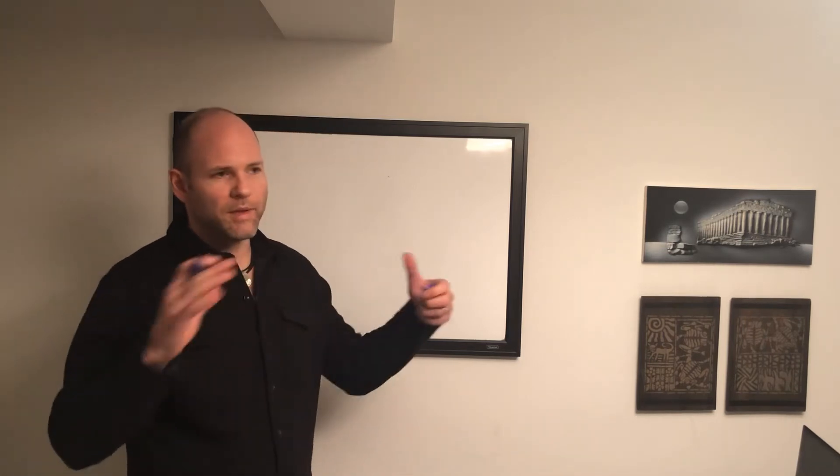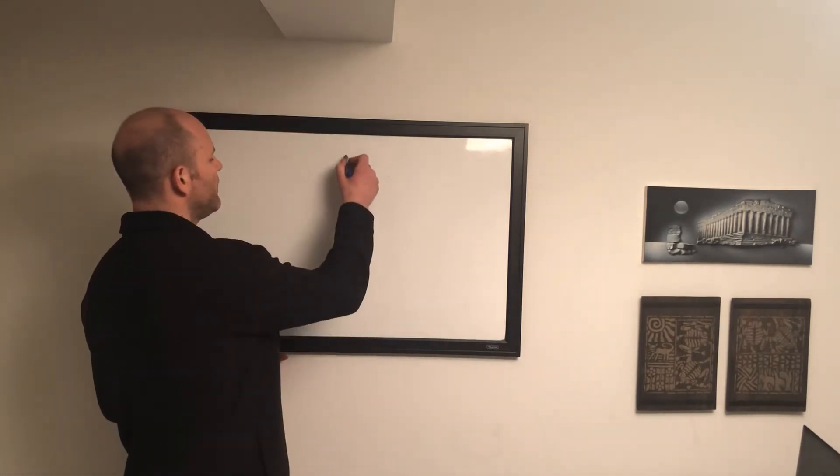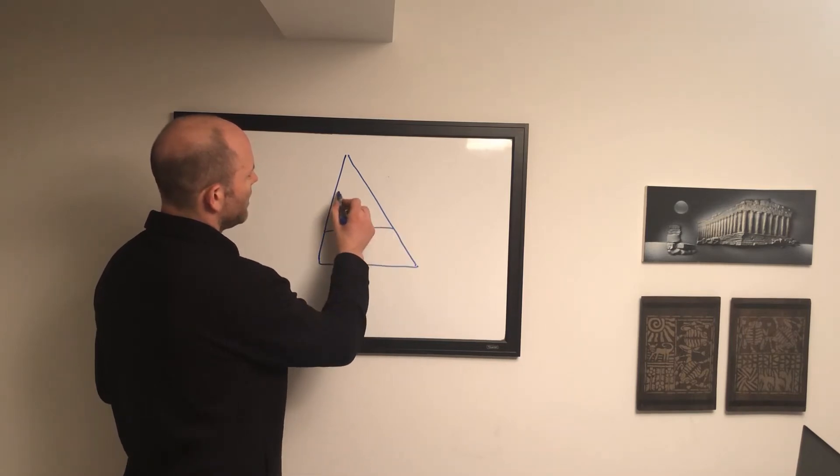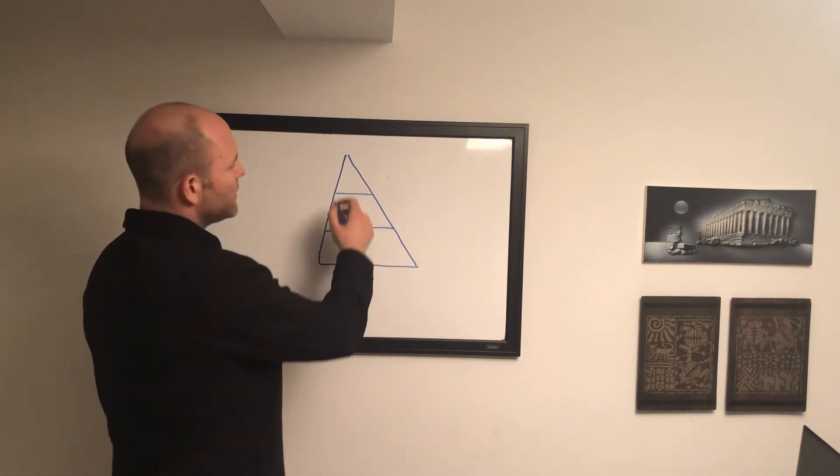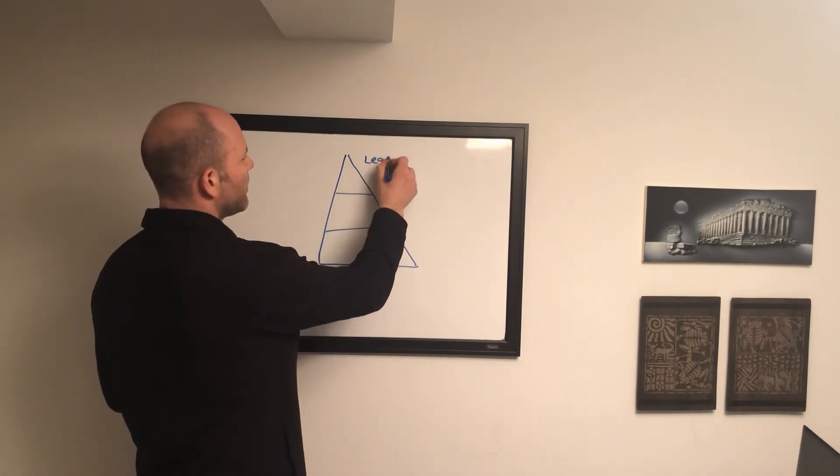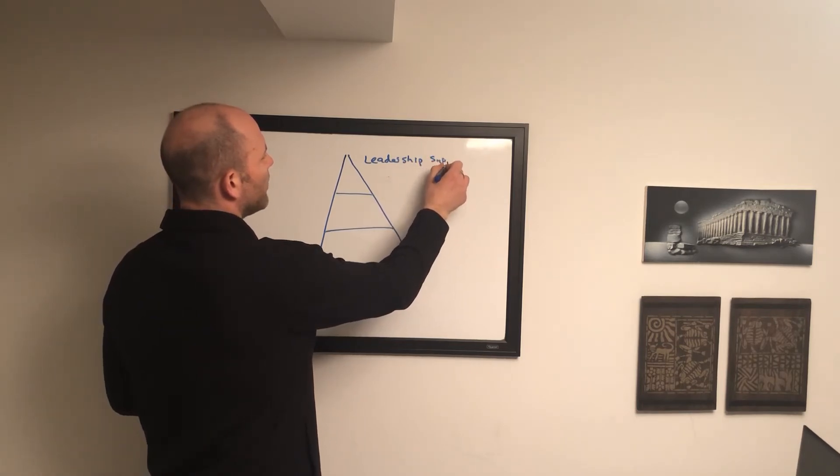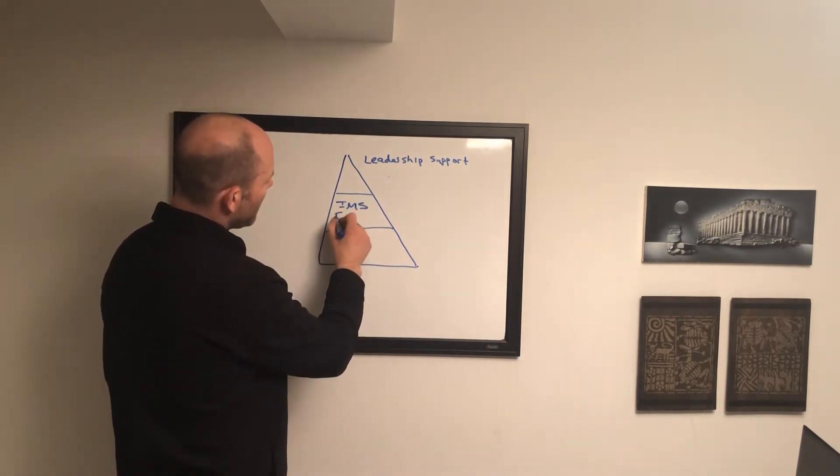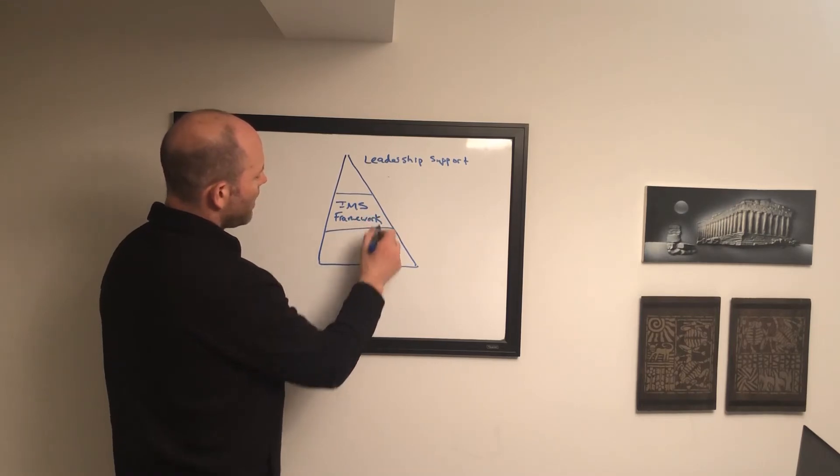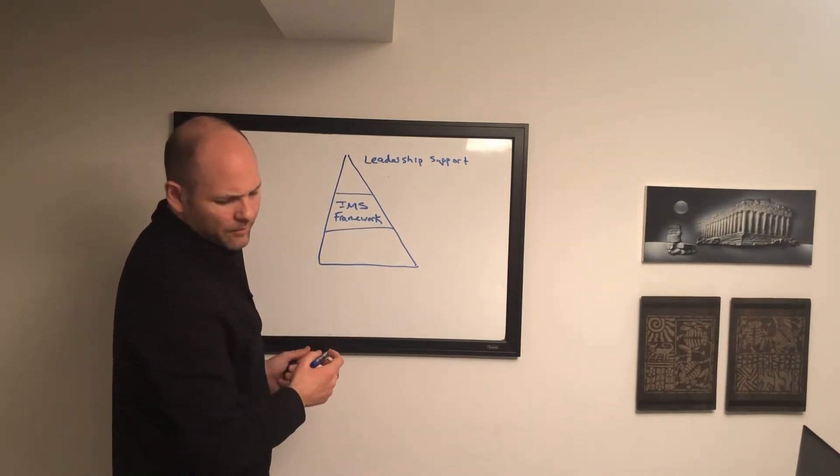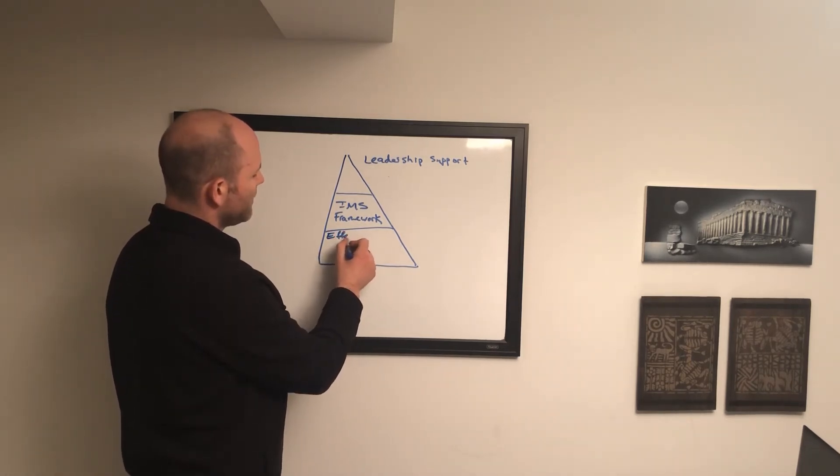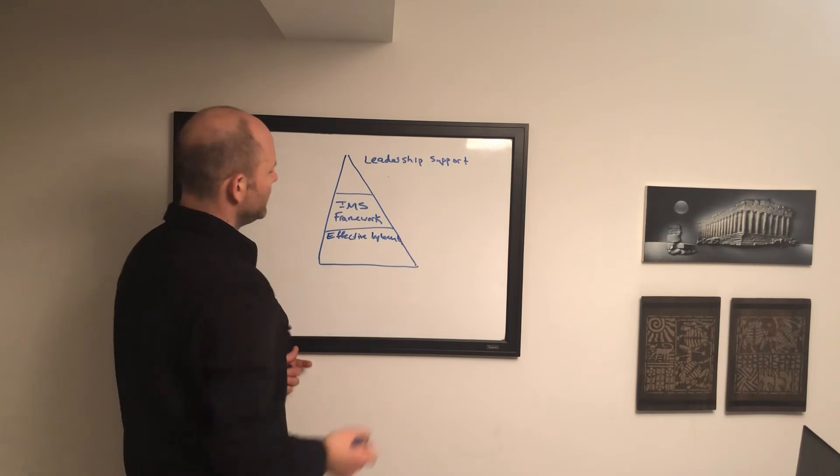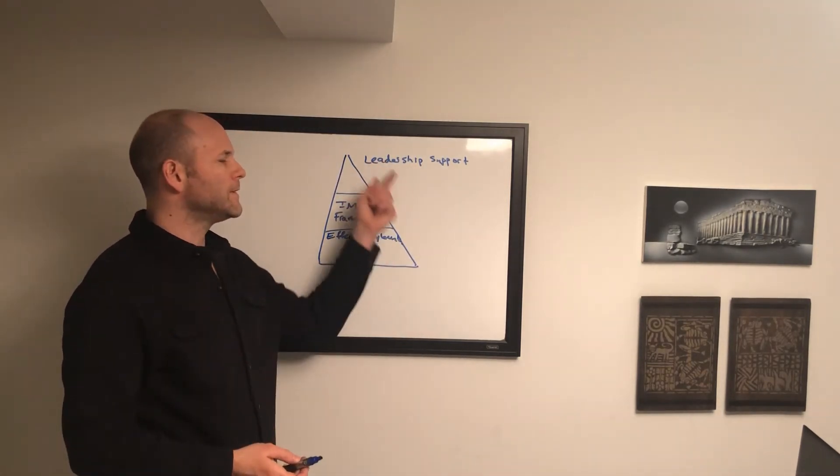But first, let's talk about business and management systems and frameworks. We often talk about a pyramid of how these things work, with three layers. At the top, we can call this leadership support. In the middle, we have your IMS framework. And then at the bottom, this is where the programs run—this is your effective implementation.